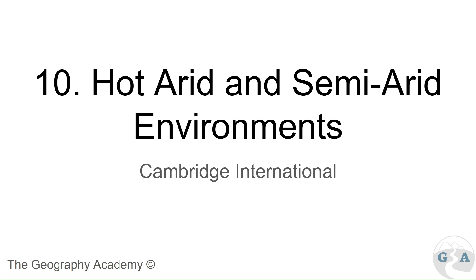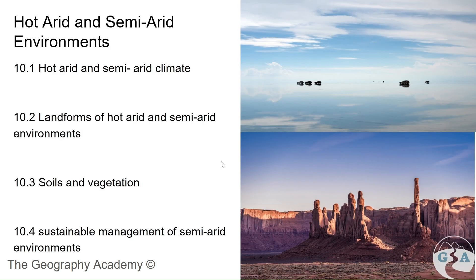In this section we'll be looking at hot, arid and semi-arid environments. We're going to look into it in four sections. The first section explains the climate zone itself - why it's located in those areas and what the characteristics are. In the second section we'll look at the landforms. In the third section we'll look at ecosystems, soil, vegetation and animals. And then we'll look at the sustainable management of hot, arid and semi-arid environments.